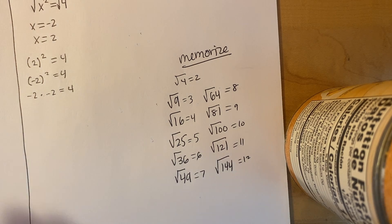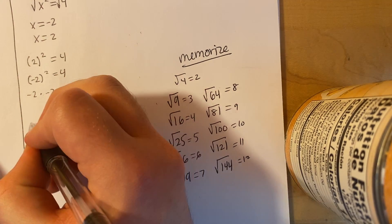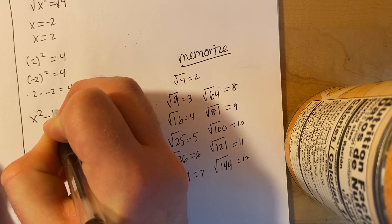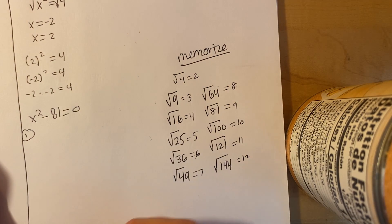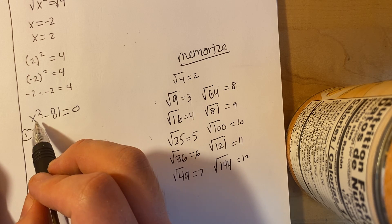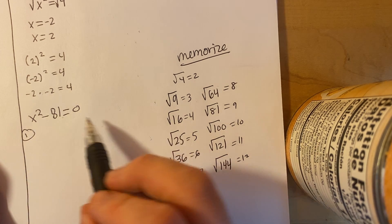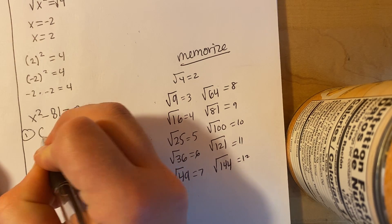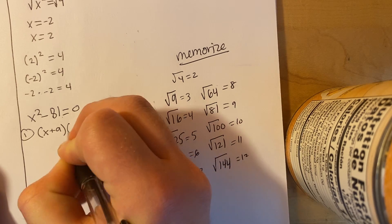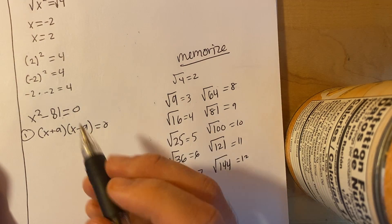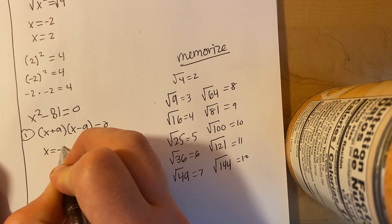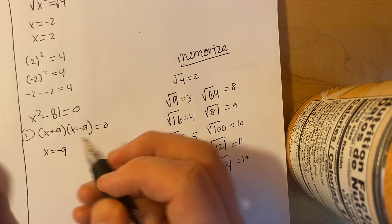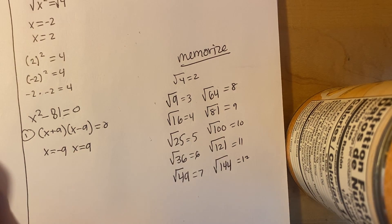We're going to try another one. We're going to do x squared minus 81 equals 0. We'll do it the first way — the difference of squares. These are both perfect squares and 81 goes with 9. So we can write (x plus 9)(x minus 9) equals 0. Due to the zero product property, x equals negative 9 and x equals positive 9.